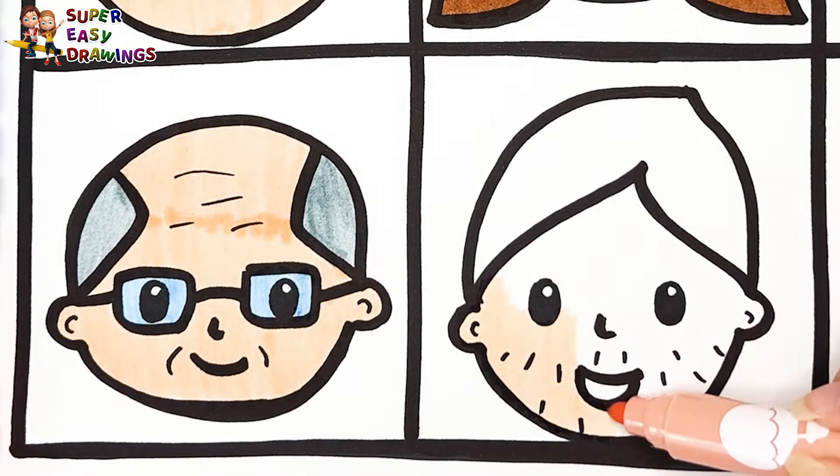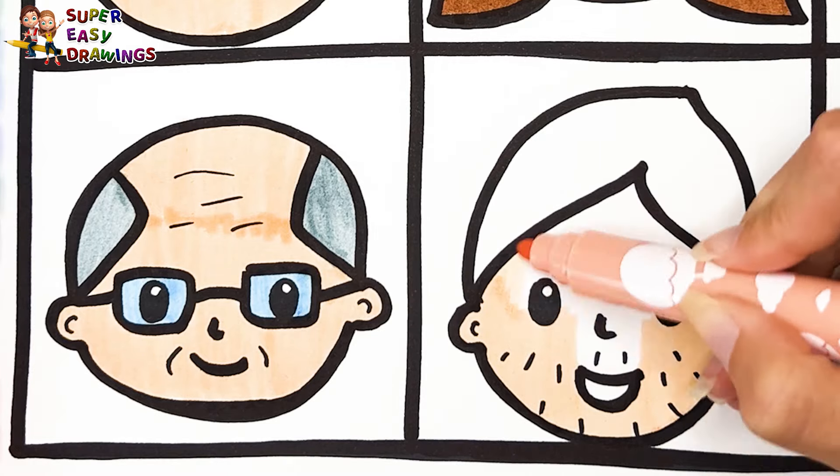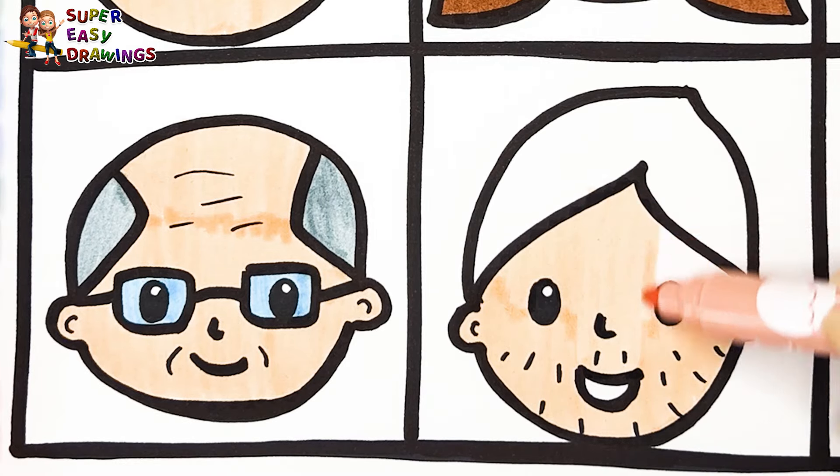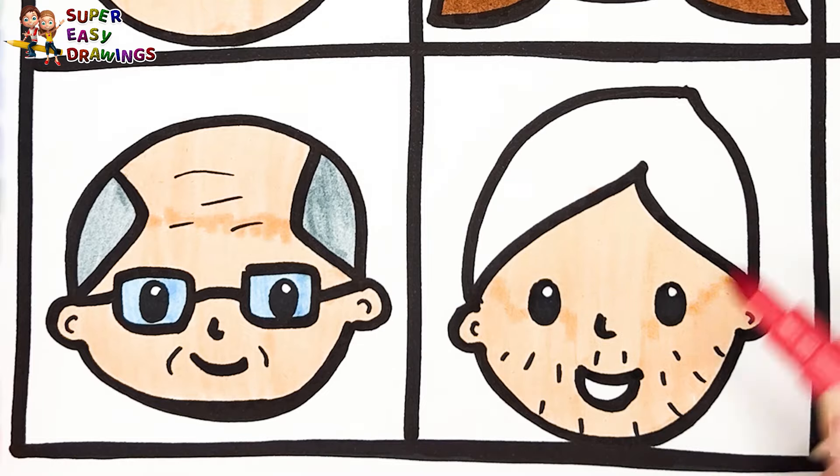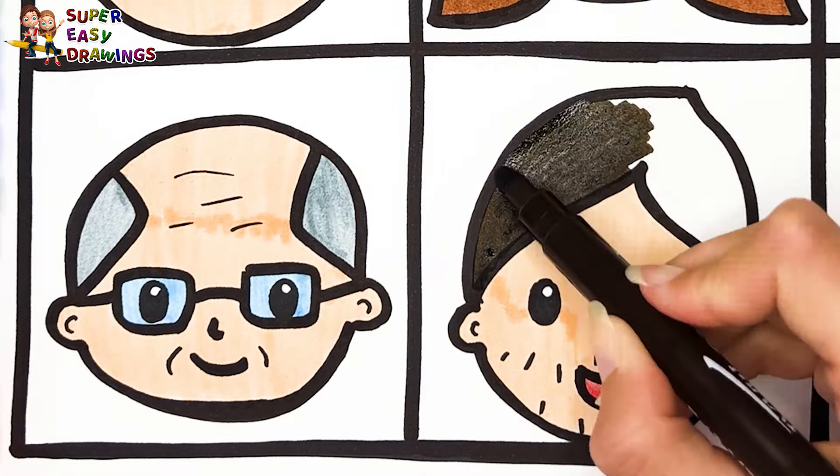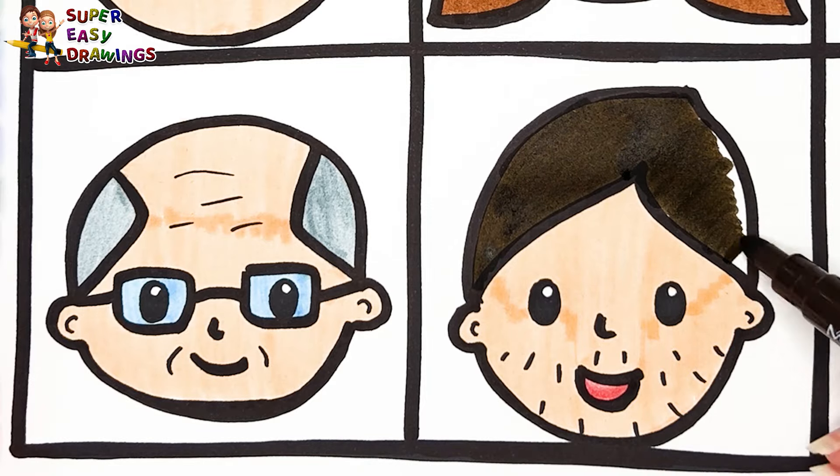I color the dad's skin with cream. His mouth is light red. And finally, I use this dark brown marker for his hair.